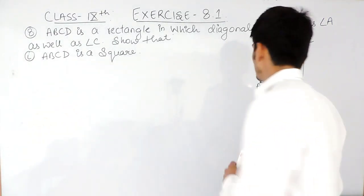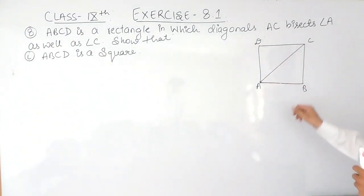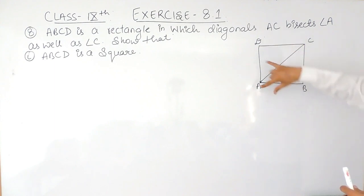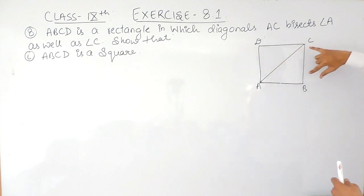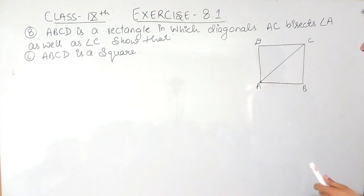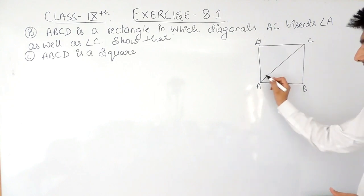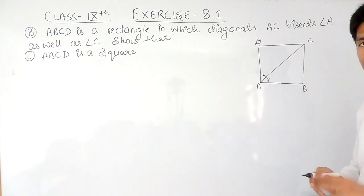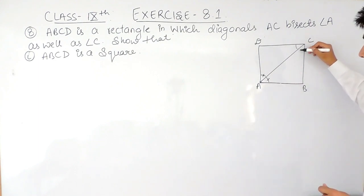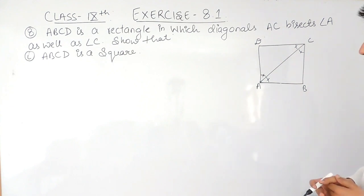This is a rectangle given to you, which means its opposite sides must be equal — this side must be equal to this side, and this side must be equal to this side. The diagonal AC is bisecting angle A as well as angle C, meaning it divides angle A into two equal parts and angle C into two equal parts. You have to prove that this is a square.